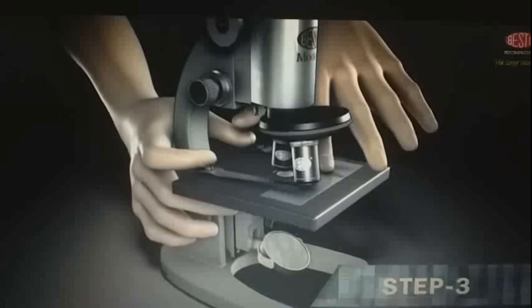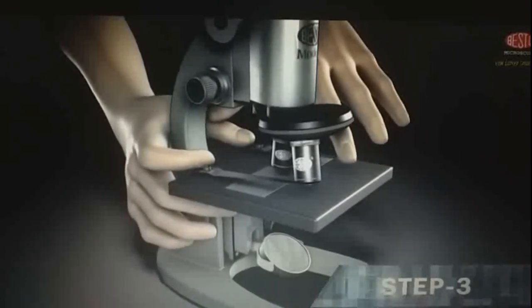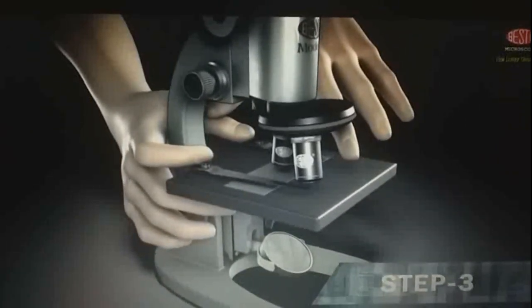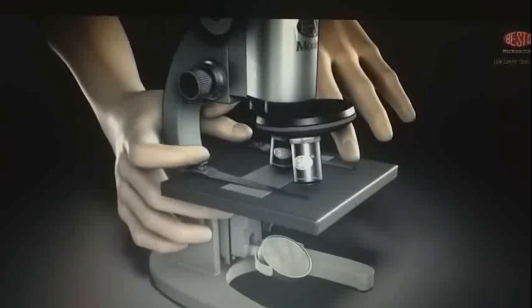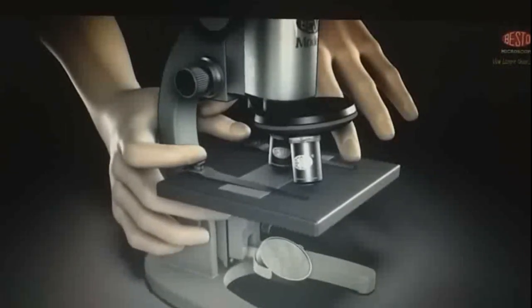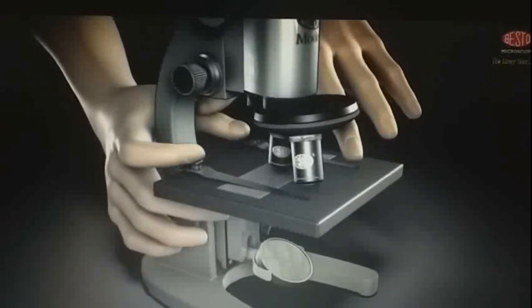Step 3. Put the slide in the stage so that the center, the bit you want to look at, is over the hole and under the lens. Use stage clips to hold slide in place.